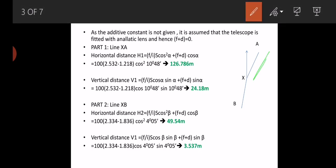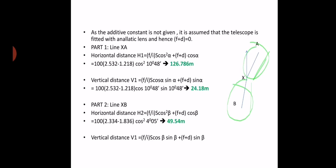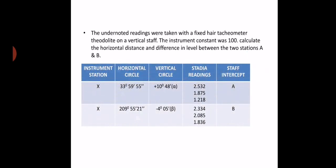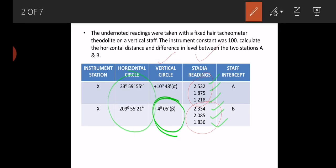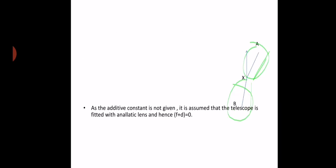We have the distances XA and XB and the vertical differences for both. The readings for XB show a negative reading, meaning the view from X to B is a depression, while X to A is an elevation. X is standing here, A is at an elevated point, and B is at a depression. Below angles are taken as negative and above angles as positive.